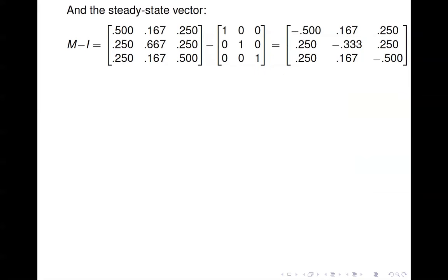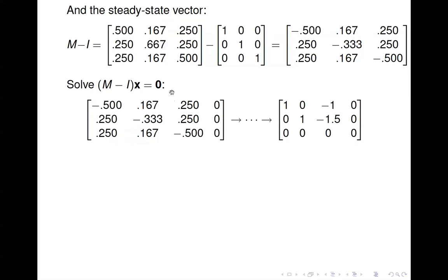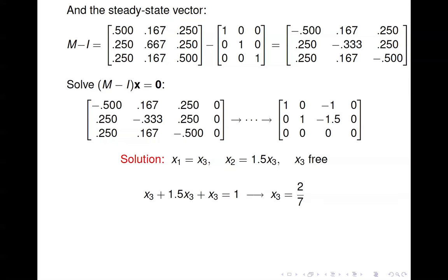To find the steady state vector, compute M minus the identity and solve (M minus I) times x equals zero. After row operations we find x₁ equals x₃, x₂ equals 1.5 times x₃, with x₃ free. You should always end up with a free variable — if you get a unique solution of zero, that's an error. Requiring elements to sum to one gives x₃ equals two-sevenths, so the steady state vector is (2/7, 3/7, 2/7).